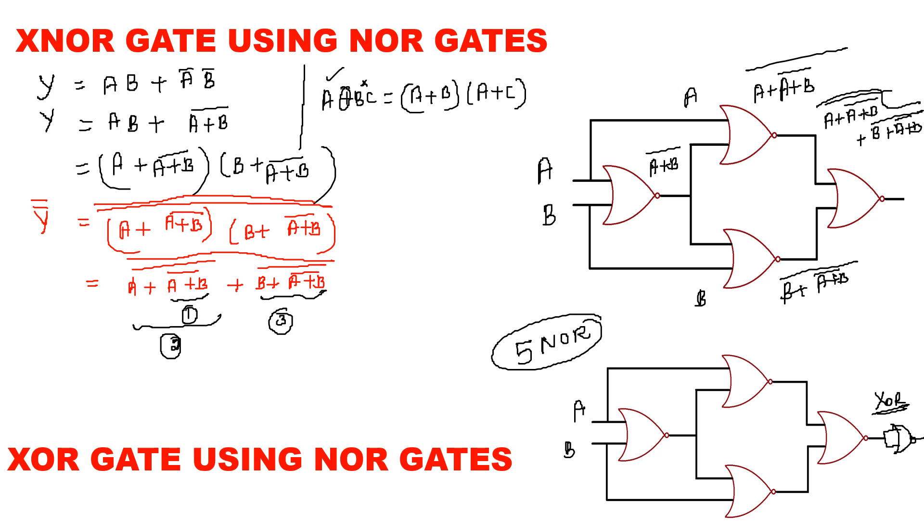But to implement XNOR gate, how many NOR gates are needed? Four NOR gates are needed. Only four NOR gates.